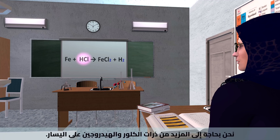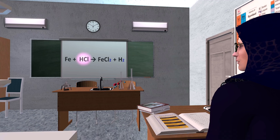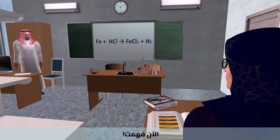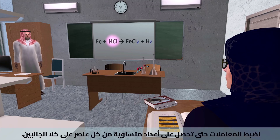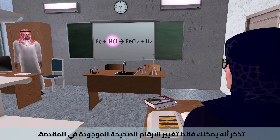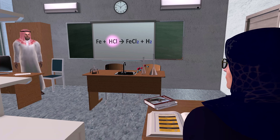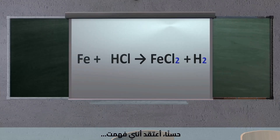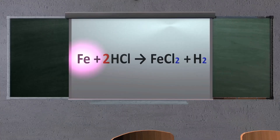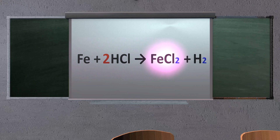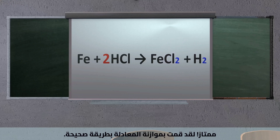Adjust the coefficients until you have equal numbers of each element on both sides. Remember, you can only change the whole numbers in front, not the numbers within the formulas. Fe plus 2HCl produces FeCl₂ plus H₂ — is that right? Excellent, you've balanced the equation perfectly.